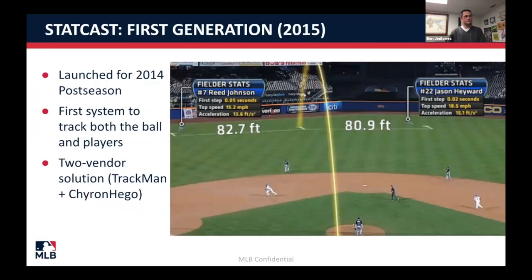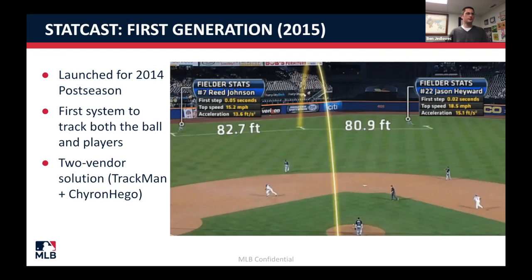That brings us to the first generation of the StatCast system, which combined a few of these pieces. The first StatCast was a two-vendor solution: a Trackman radar tracking the pitch and the hit, and a Chiron Higo camera system tracking players around the field. We could track exactly how far outfielders had to run to reach the landing point of a ball, measure reaction time, top speed, and acceleration. This was really groundbreaking — we were tracking almost everything happening on the field of play.